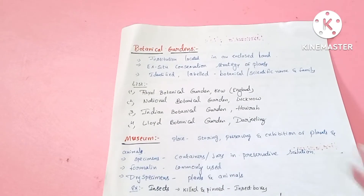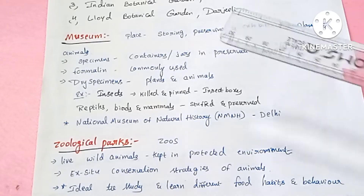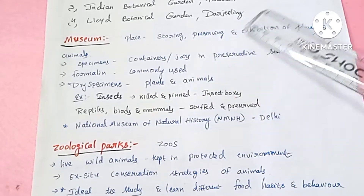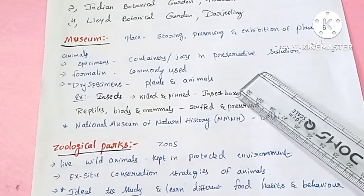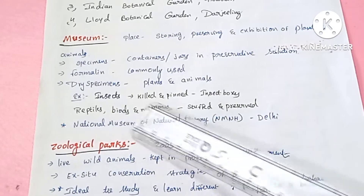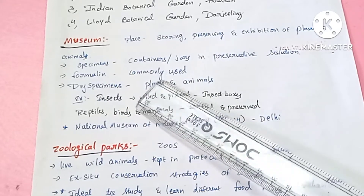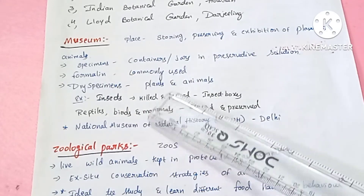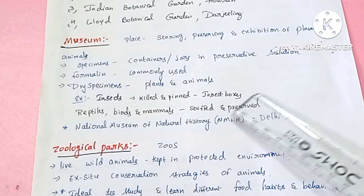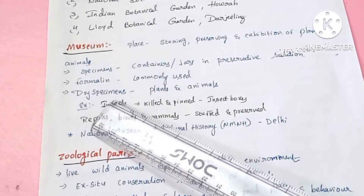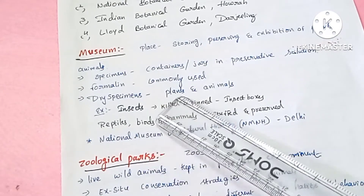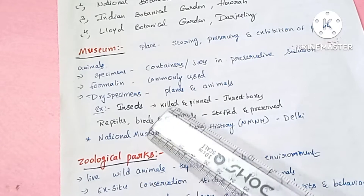The next taxonomical aid is the Museum. Museums are very important where particular plants and animals are stored and preserved. Specimens are exhibited in glass jars and other containers using preservation liquids. The commonly used preservation liquid is formalin. Dry specimens are also used for plants and animals.